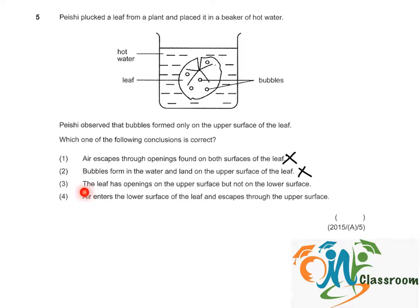Option three, the leaf has openings on the upper surface but not on the lower surface. This is correct because the air in the leaf only comes out from the upper surface instead of the lower surface.